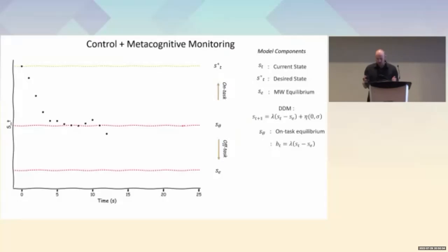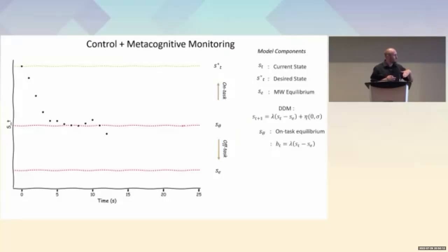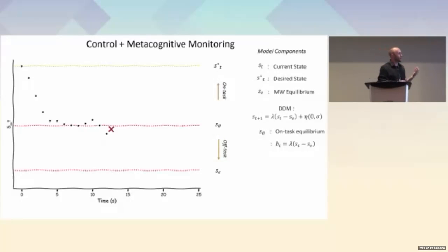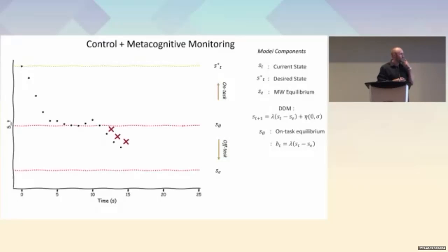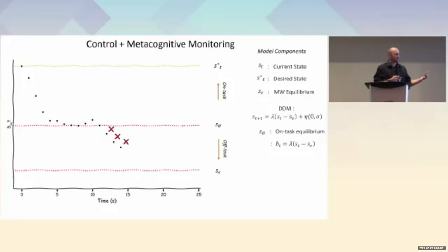With both functions together, we can simulate the process of meditation. At the beginning, attention to breath is at a maximum but drifts toward a steady state — a compromise between optimal and acceptable task performance. On some time step there is a missed sample, meaning you don't check what is on mind; as a result no control is applied, we drift further toward mind wandering, which simultaneously decreases the probability of sampling on the next state.